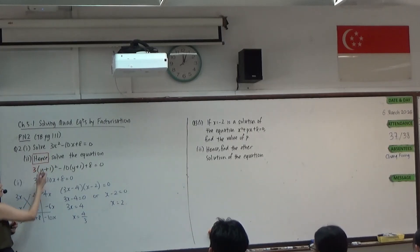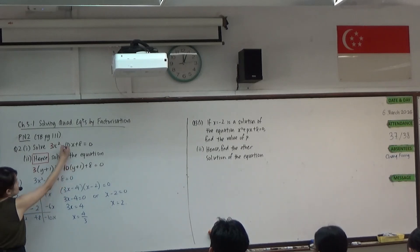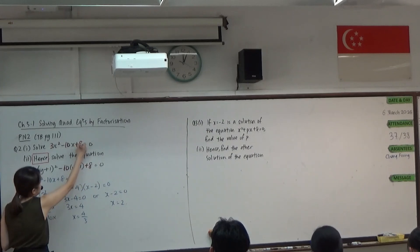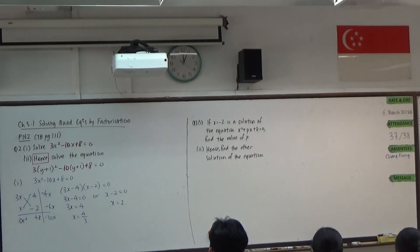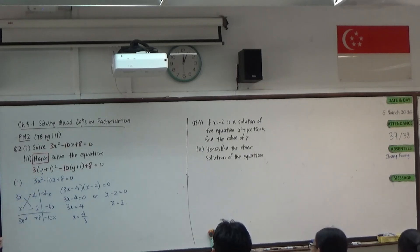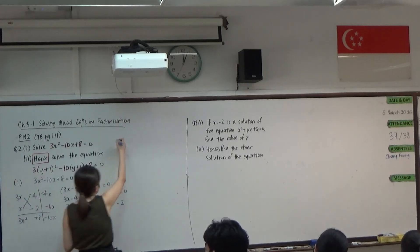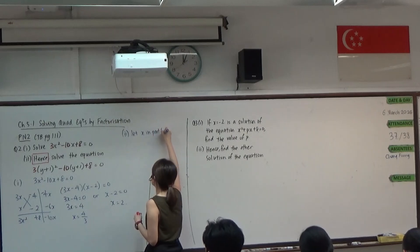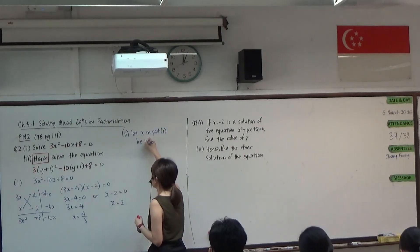If you want to match it, I have my 3 here, I have my negative 10, and I also have my positive 8. So what is the difference between the equation from part i and the equation from part 2? Our x and our (y+1) match up with each other. So to make use of our answer in part i, we need to let x in part i be y plus 1.